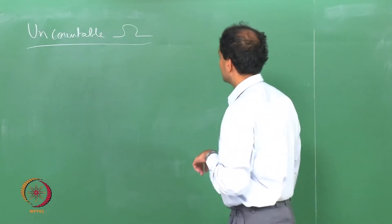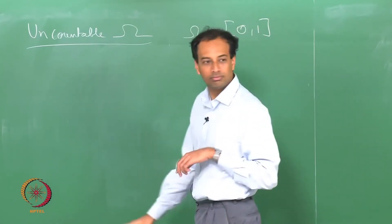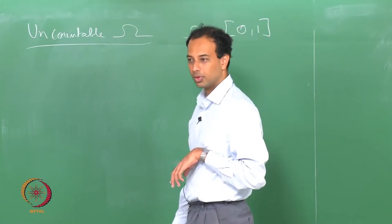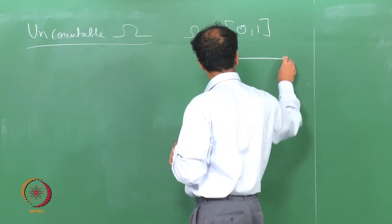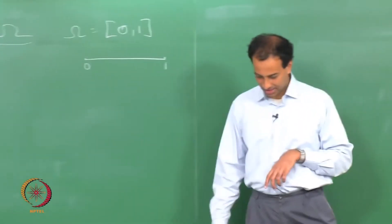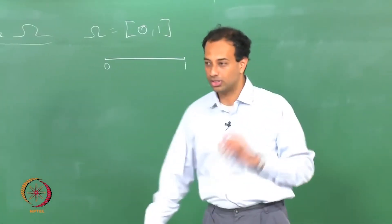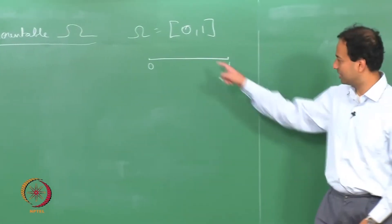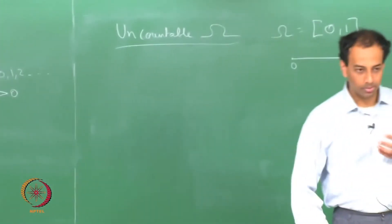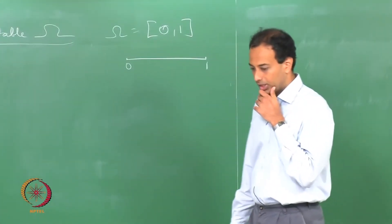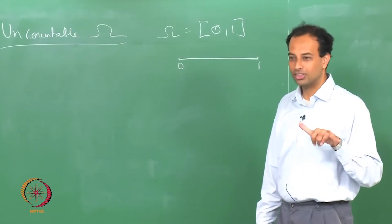Let us take an example. Let us say omega equals the interval [0,1]. You want to deal with this sample space. Let us take a very specific example: you are throwing darts on this line. The dart will land somewhere on this line and you want to mathematically model the intuitive concept of the dart landing uniformly on this [0,1] interval.